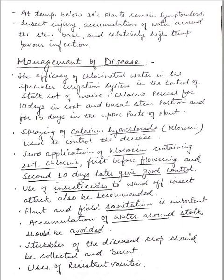For control, chlorinated water in the sprinkler irrigation system has shown efficacy against stock rot of maize. Chlorine is present for 10 days in root and basal stem portions and for 15 days in the upper part of the plant. Two applications of chlorosine containing 22% chlorine — first before flowering and second 10 days later — give good control. Calcium hypochloride treatment can be used for best results.